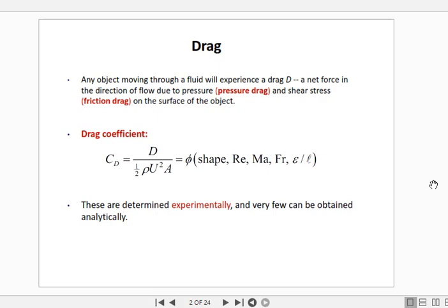In this lecture we will discuss briefly about drag and its different characteristics. First of all, drag is the force that acts on a body along the direction of motion. Any object moving through a fluid will experience a drag. This drag occurs due to two different reasons: pressure drag and friction drag, which we also call shear stress drag.